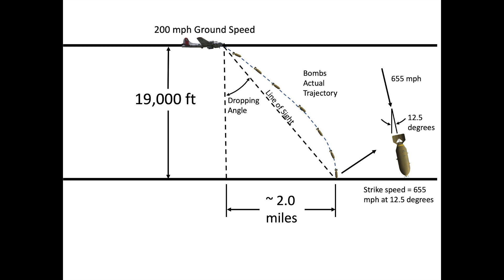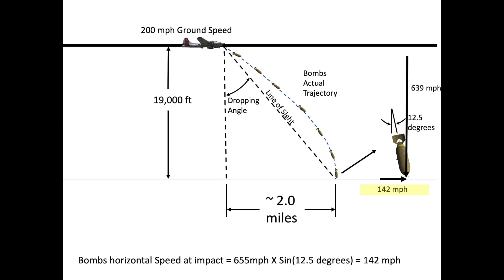Assuming the bomb's horizontal and vertical speed components are coupled to the bomb strike angle, the bomb's horizontal speed at ground impact will equate to 655 miles per hour times the sine of 12.5 degrees or 142 miles per hour.